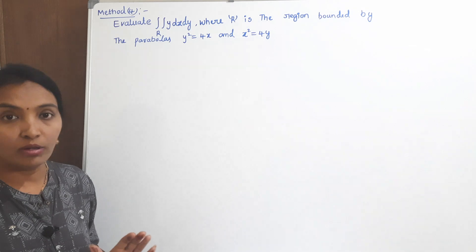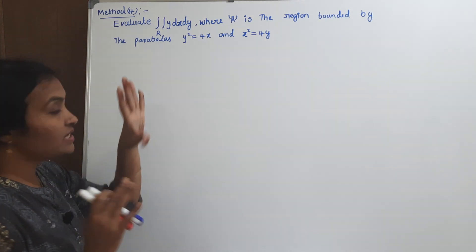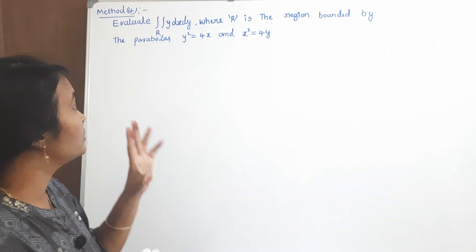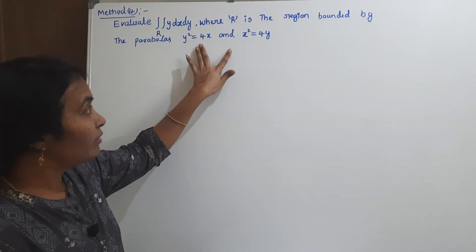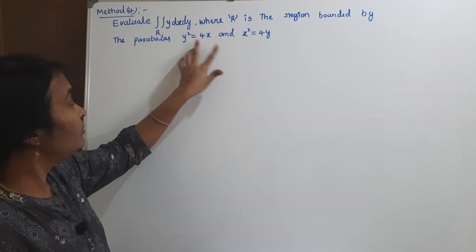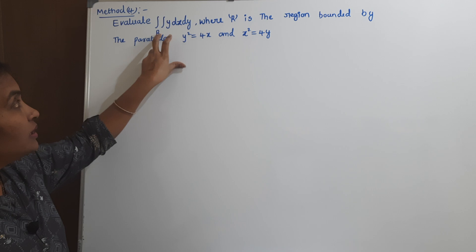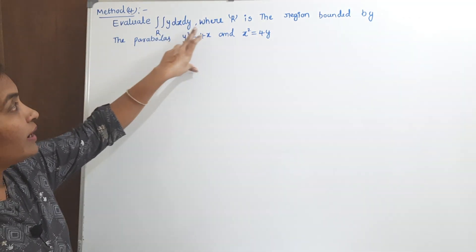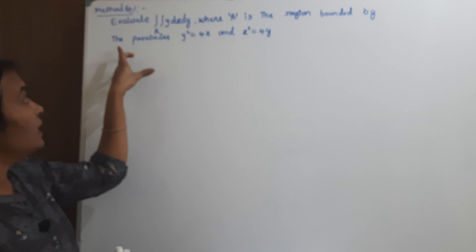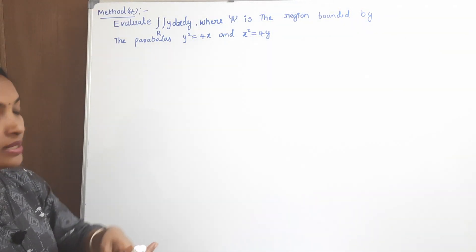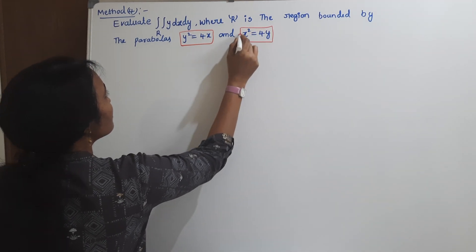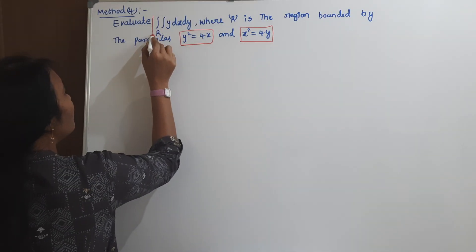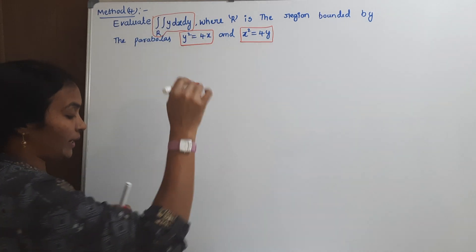Let us read the problem carefully. We have two regions — two parabolas. By using these two parabolas, I need to calculate the limits. The given problem is: evaluate the double integral of y dx dy, where R is the region bounded by the parabolas y² = 4x and x² = 4y.